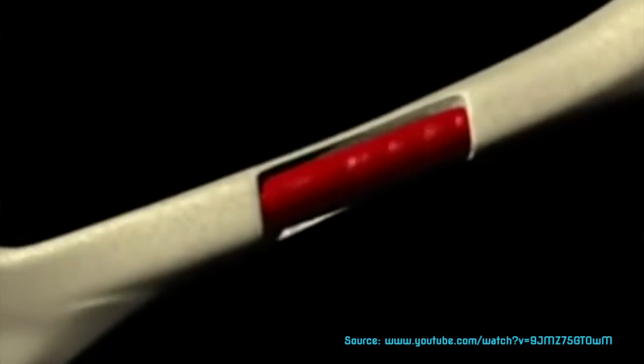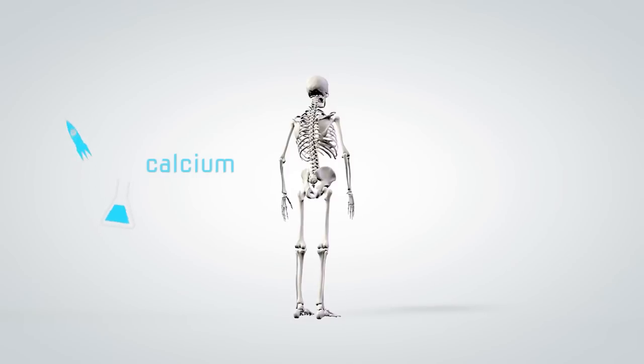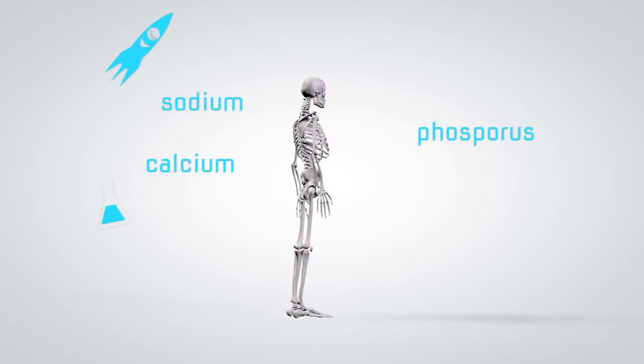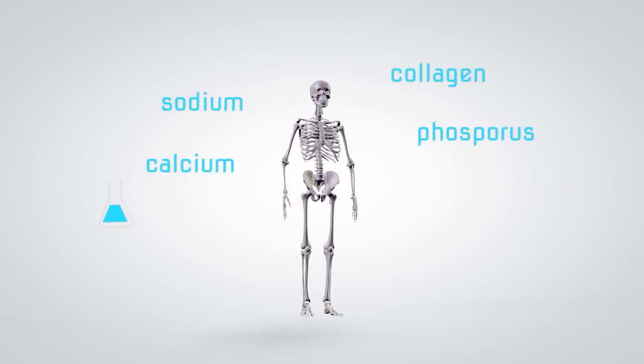Bones have blood vessels and nerves like the rest of our body, and they're made up of things like calcium, phosphorus, sodium, and other elements, including a protein called collagen.